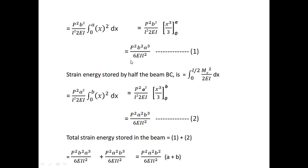So the result is P²b²/(6EIL²) into a cubed. Applying the limit, x cubed becomes a cubed. So the strain energy for the AC portion is P²b²a³ divided by 6EIL².